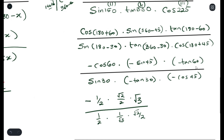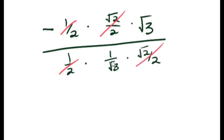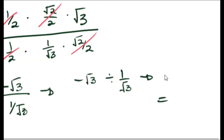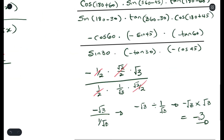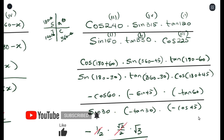Now we cross-cancel. In the numerator and denominator we see a half and a half which cancel out, and root 2 over 2 appears twice and cancels out too. We're left with negative root 3 over 1 over root 3. Rewriting: negative root 3 divided by 1 over root 3 is the same as negative root 3 times root 3, which equals negative 3. That is your final answer — this is exactly how you use the reduction formula to simplify expressions with numeric angles.